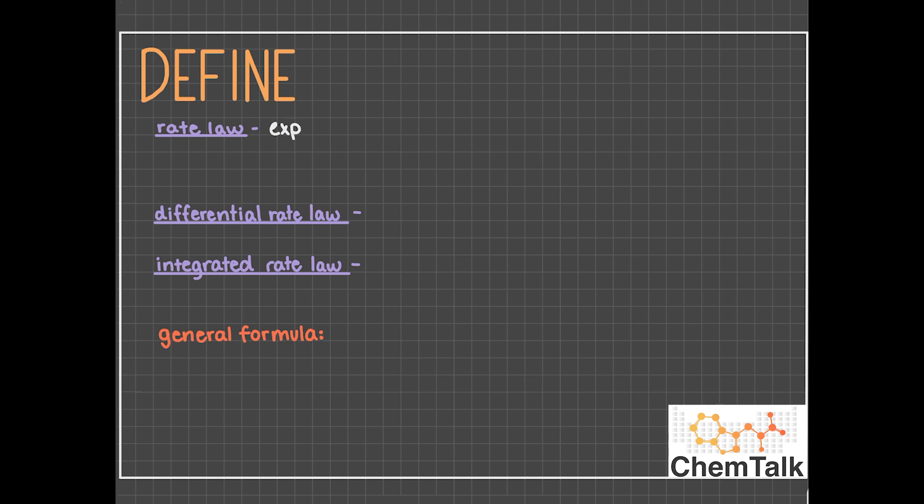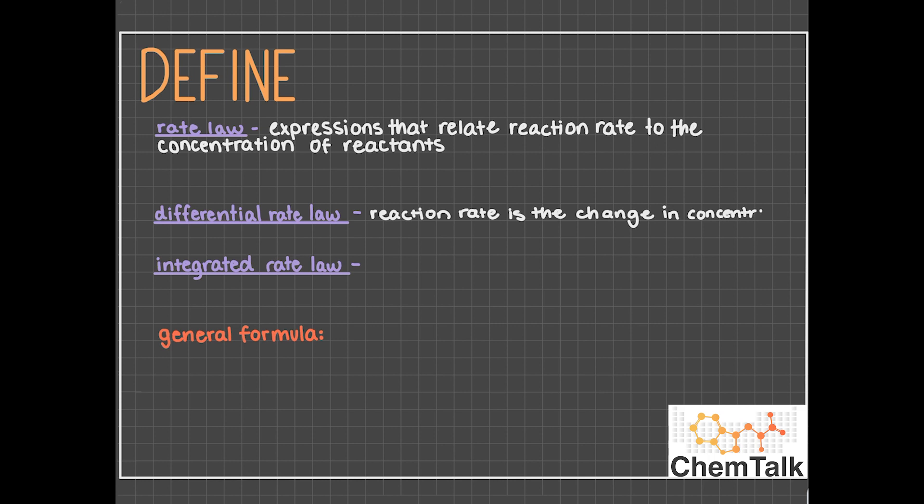Rate laws are expressions that relate reaction rate to the concentration of reactants. Reaction rate can be written in two different ways. In differential rate law, reaction rate is the change in concentration of reactants over time. Integrated rate law states that reaction rate is the initial concentration and the measured concentration of reactants after a certain amount of time.